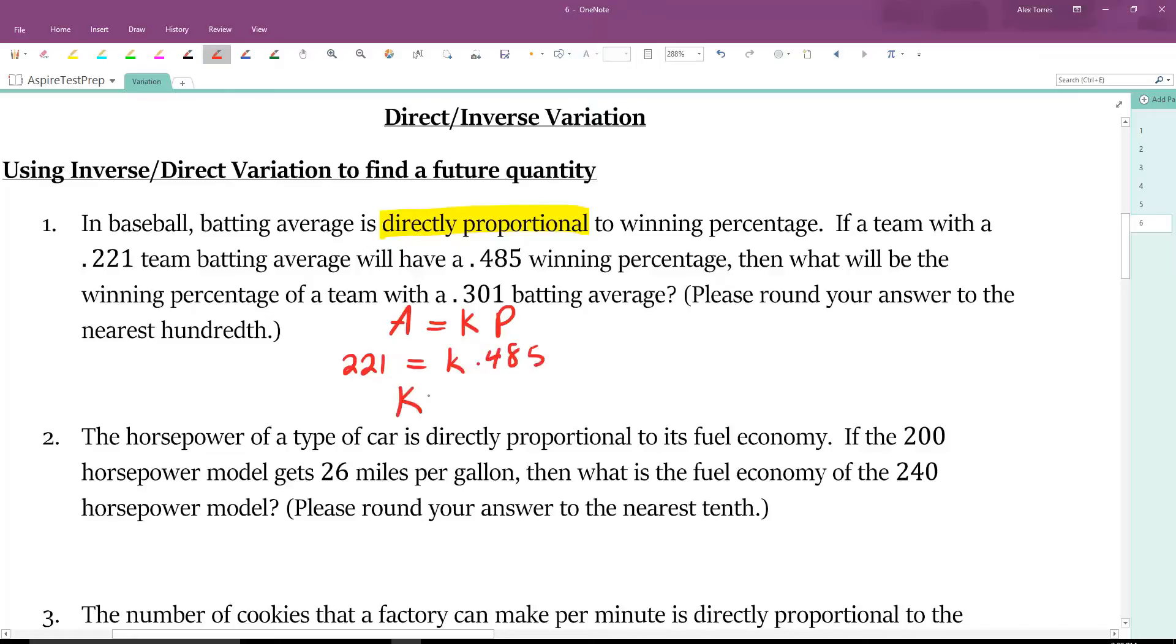We can divide both sides by 0.485 and solve for k. So, 0.221 divided by 0.485 is 0.45567, and it goes on. But now, that allows us to rewrite the equation. A equals 0.456 times p. All we did there is we replaced k with what k is equal to, given the initial information that we had.